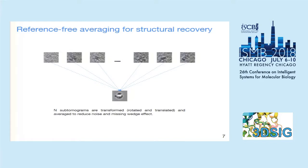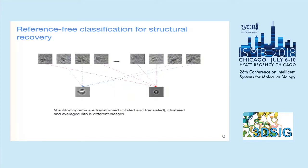For successful structure recovery, reference-free averaging methods are needed. As shown in the picture, N subtomograms are transformed — meaning rotated and translated — and averaged to reduce noise and missing wedge effects. When there are multiple classes of tomograms, the task becomes reference-free classification, where N subtomograms are transformed, clustered, and averaged into K different classes. In this example, K equals 2.